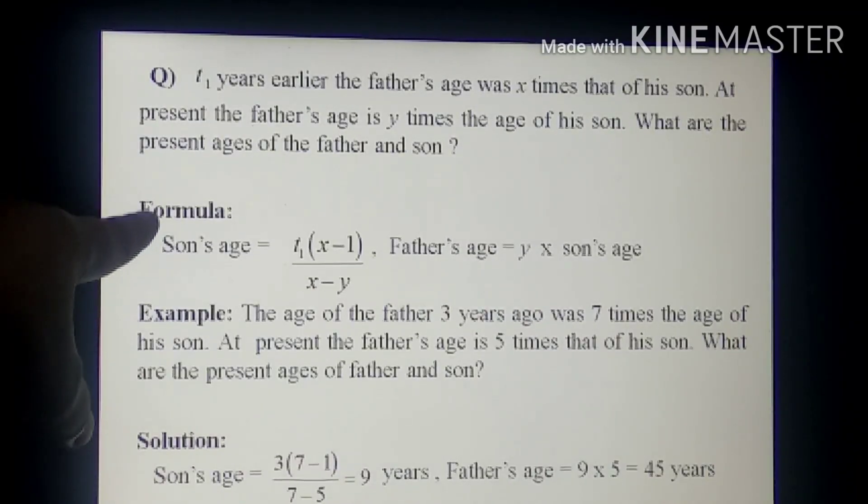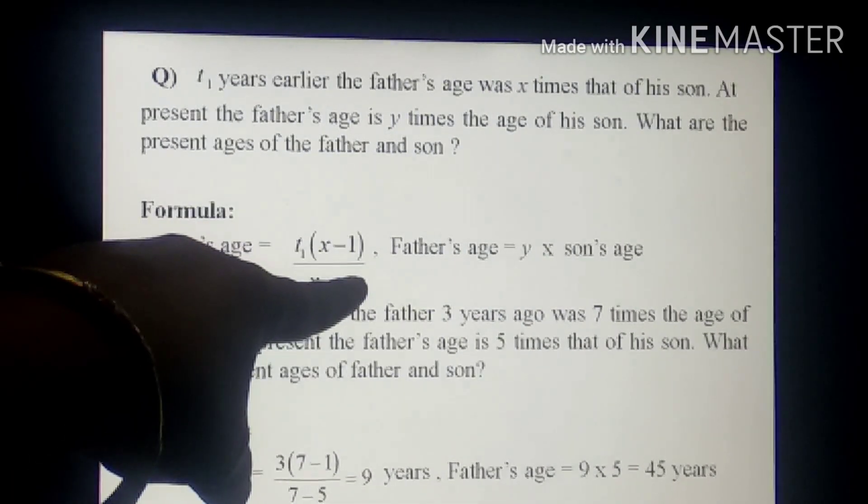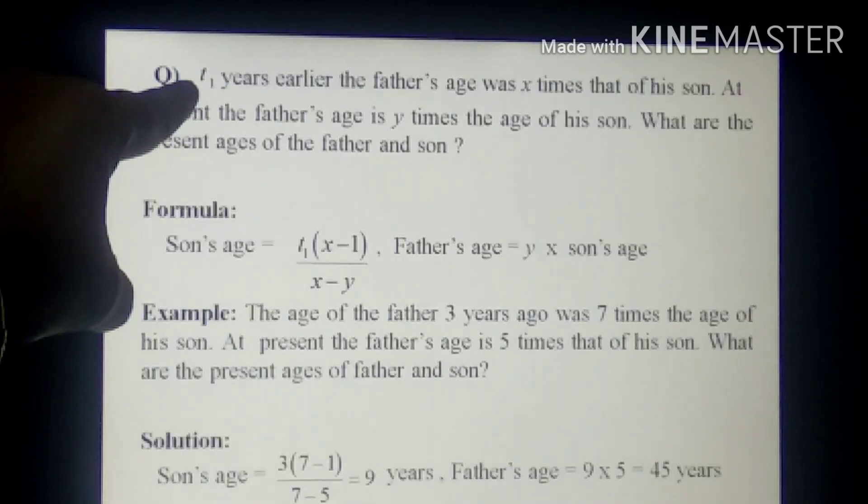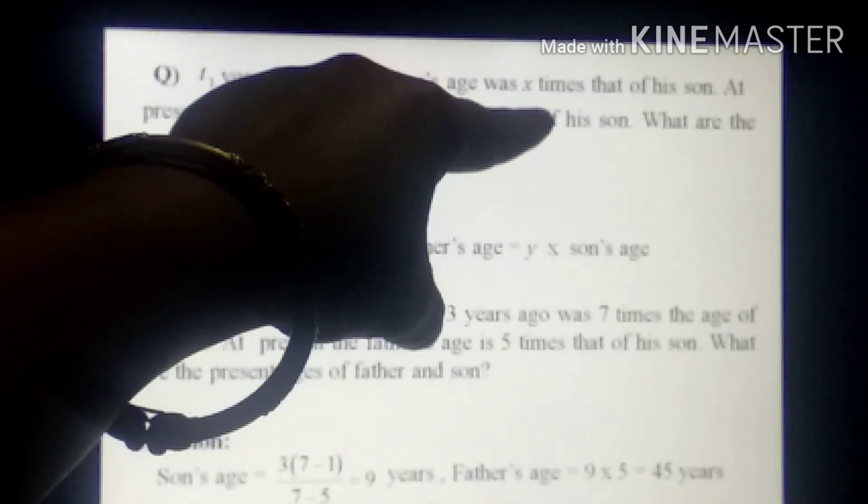So our formula is son's age equals T1(X-1) divided by (X-Y). Here T1 is the T1 years earlier. X is the father's age X times that of his son.